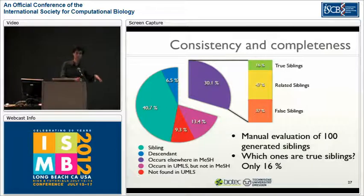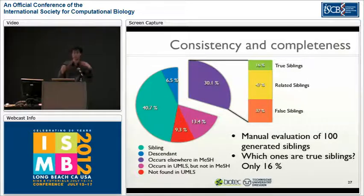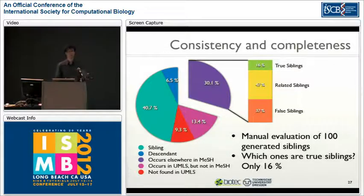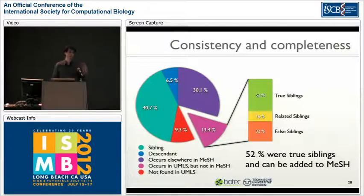We also performed manual evaluation. We took a random sample of terms that occur elsewhere in MeSH (but not in the target sibling sets) and did an error analysis to check how many could actually be added to those sibling sets. Only 16% of manually evaluated terms actually belonged to the sibling set, showing MeSH is largely consistent regarding term placement. We also evaluated terms occurring in UMLS but not in MeSH: of 100 such terms, 52% were true siblings — so in some parts MeSH is still incomplete.